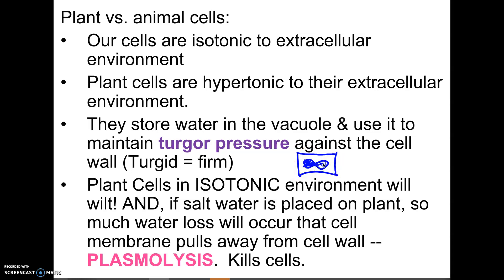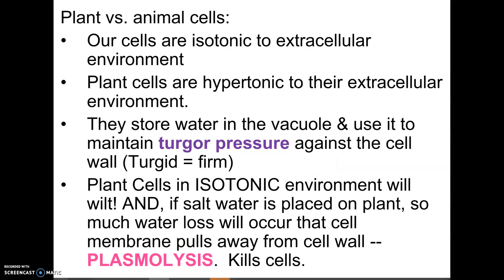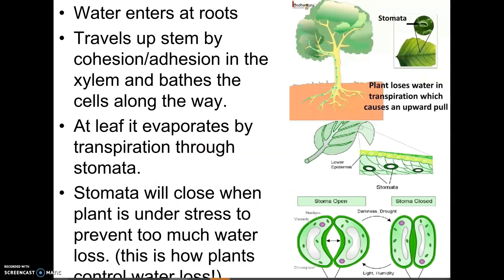The cell membrane will pull away from the cell wall, the vacuole loses all its water, and you're going to see this in the lab — it's called plasmolysis. That would actually kill the plant cells. So again, animal cells are isotonic to their environment, while plant cells tend to be hypertonic to their extracellular environment.